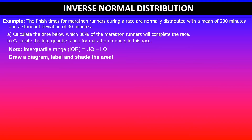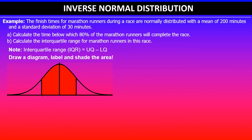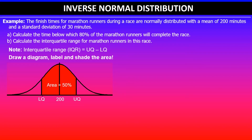As always, begin by drawing a diagram, labelling it, and shading the required area. We are looking for the interquartile range, which lies between the upper and lower quartiles. The lower quartile captures 25% of the data and the upper quartile captures 75%. The mean is 200 minutes, and the shaded central area between the two quartiles covers 50%, which equals 0.5.